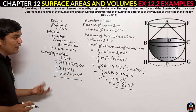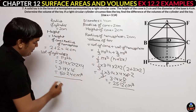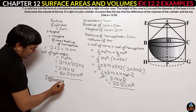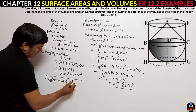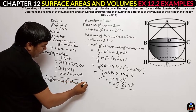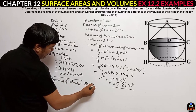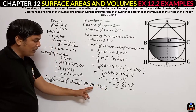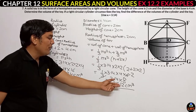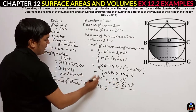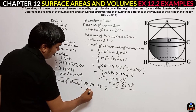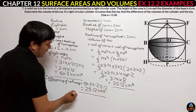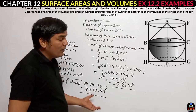This is the volume of the cylinder. Now we need to find the difference: cylinder volume minus toy volume = 50.24 − 25.12 = 25.12 cm³. This is the difference of the volumes, which is what the question asked us to find.